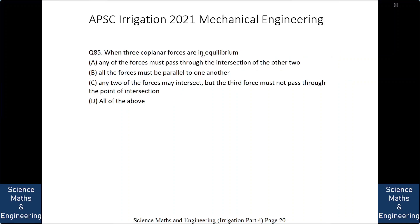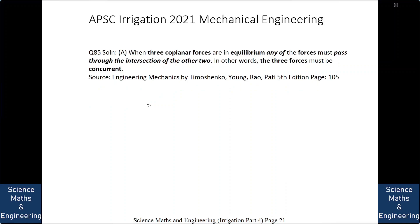When three coplanar forces are in equilibrium: A. Any of the forces must pass through the intersection of the other two, B. All the forces must be parallel to one another, C. Any two forces may intersect but the third must not pass through that point, or D. All of the above. The answer is A. When three coplanar forces are in equilibrium, they must be concurrent — all three must pass through a common point.